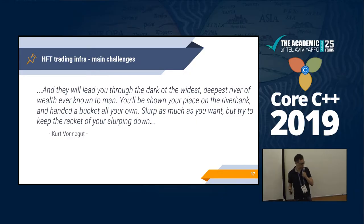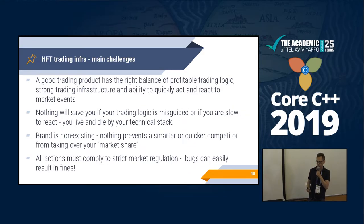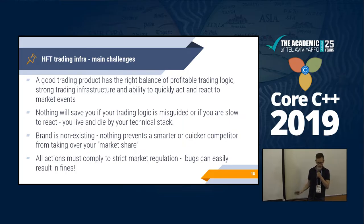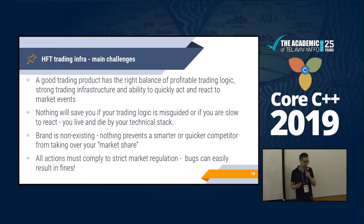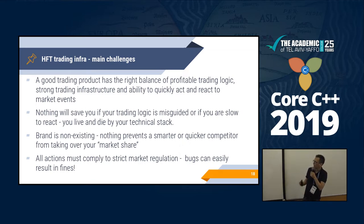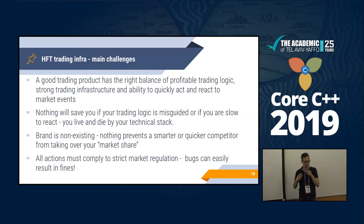A good trading algo needs very good logic that is profitable, an infrastructure that provides everything that logic requires, and it needs to be very, very fast. Nothing will save you if your logic is misguided or if you're too slow to react. For example, Knight Capital used to be maybe the biggest trading firm in the world — in 2012 they went bankrupt, losing $460 million in 45 minutes because they ran testing logic in production. You don't have any market share or brand; nothing prevents a quicker competitor from swooping everything you have.